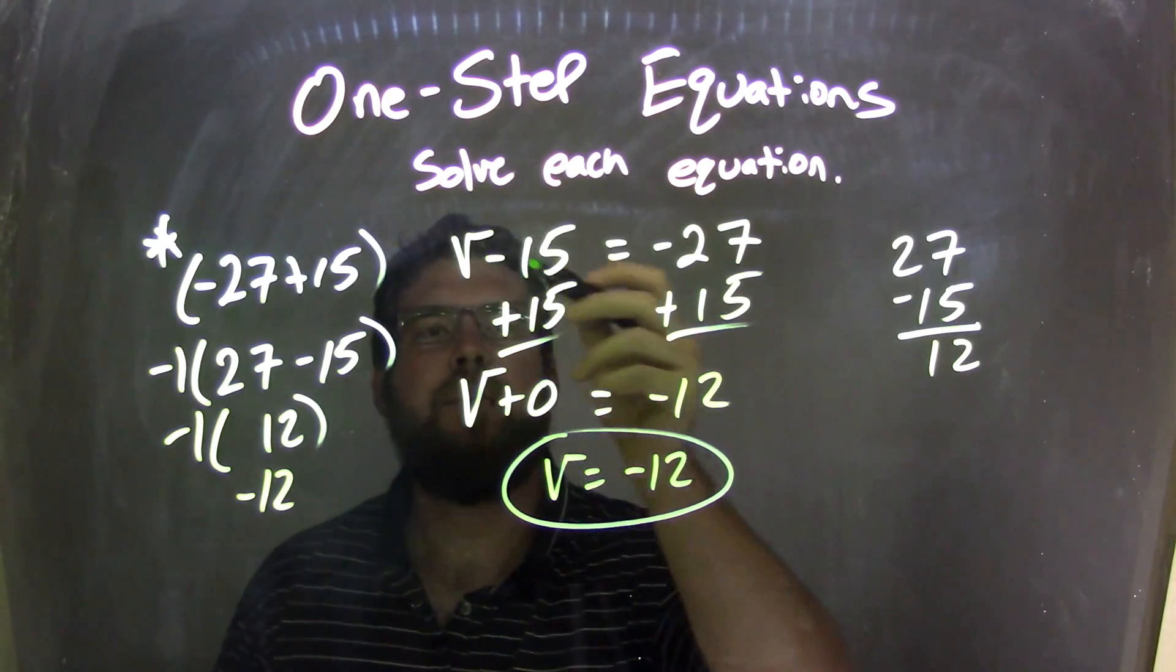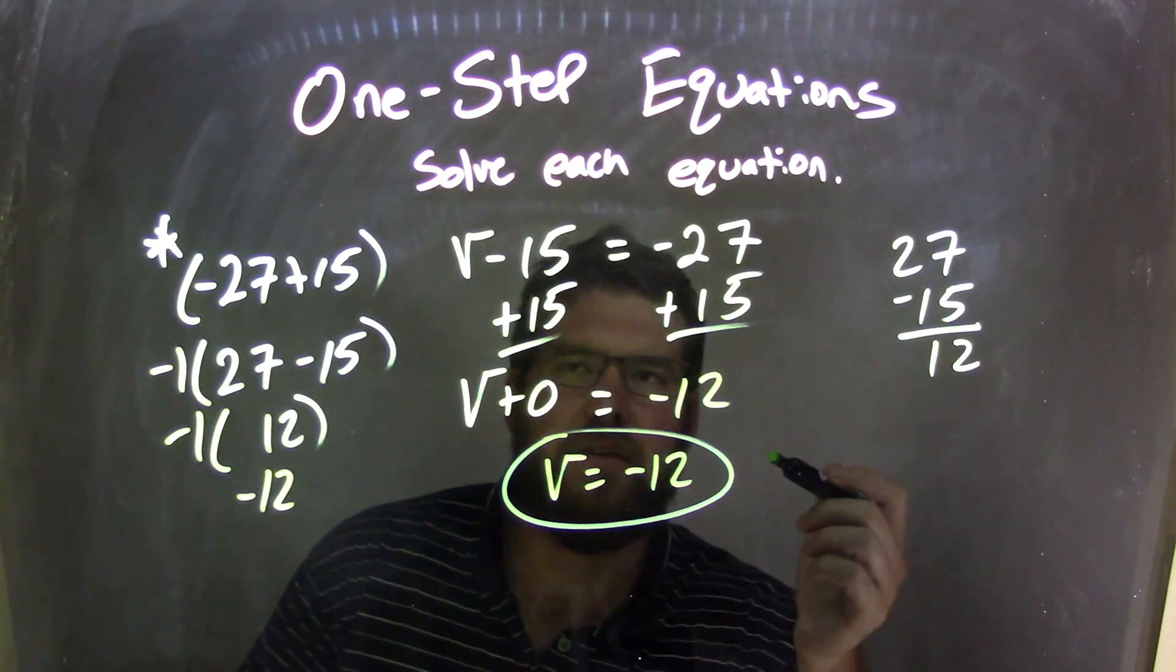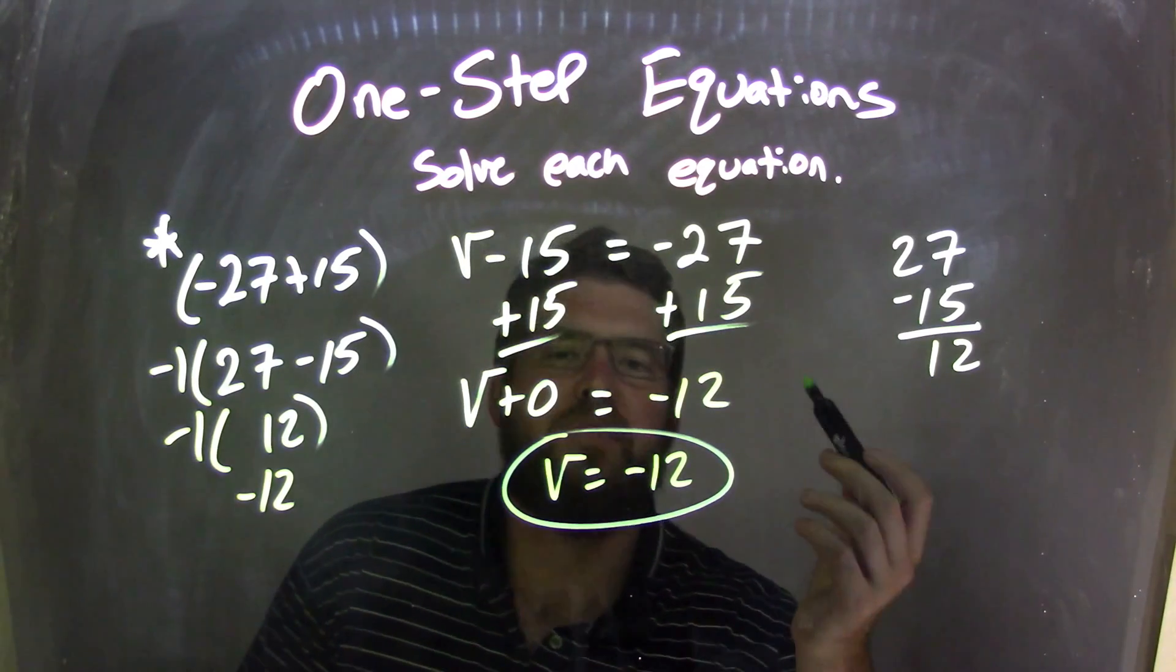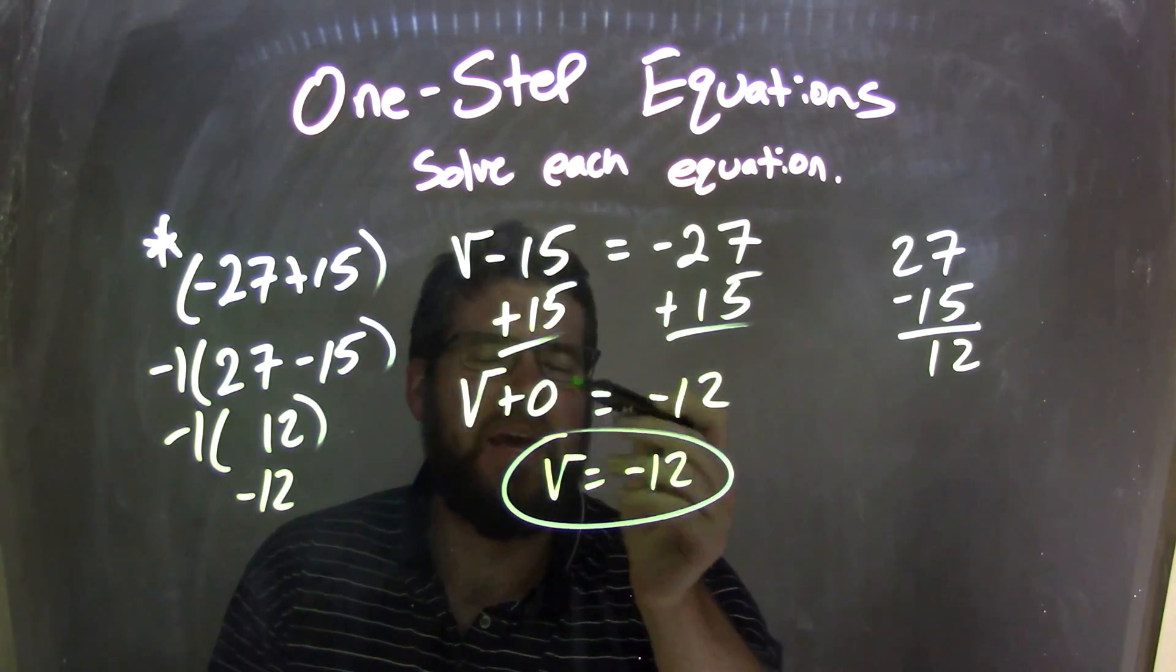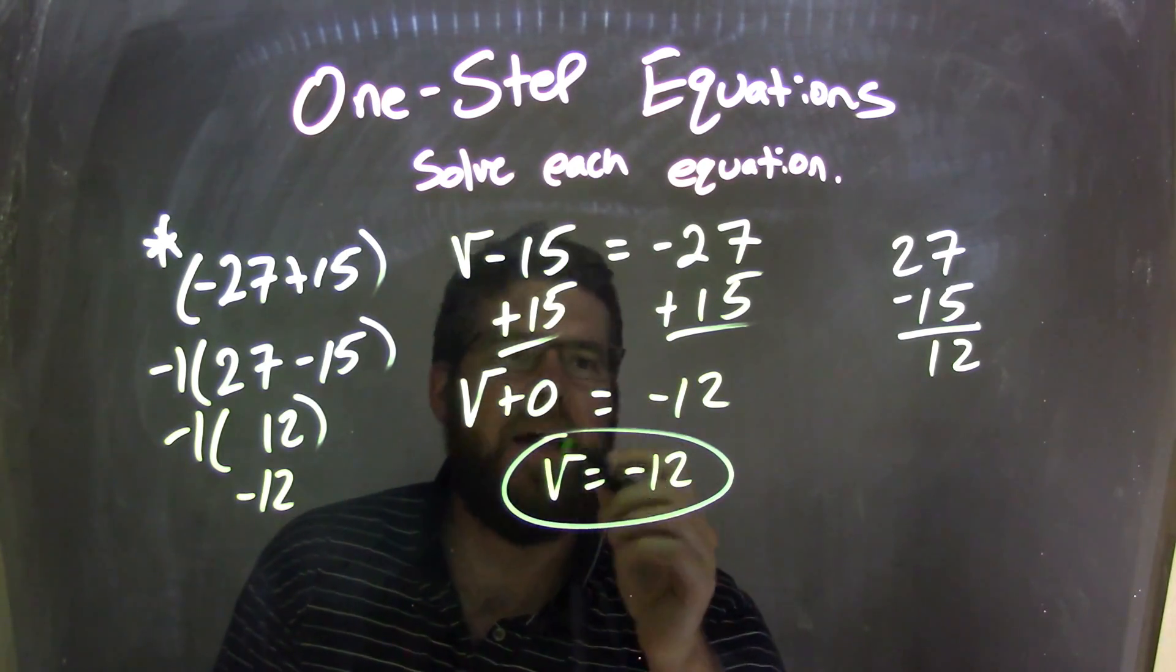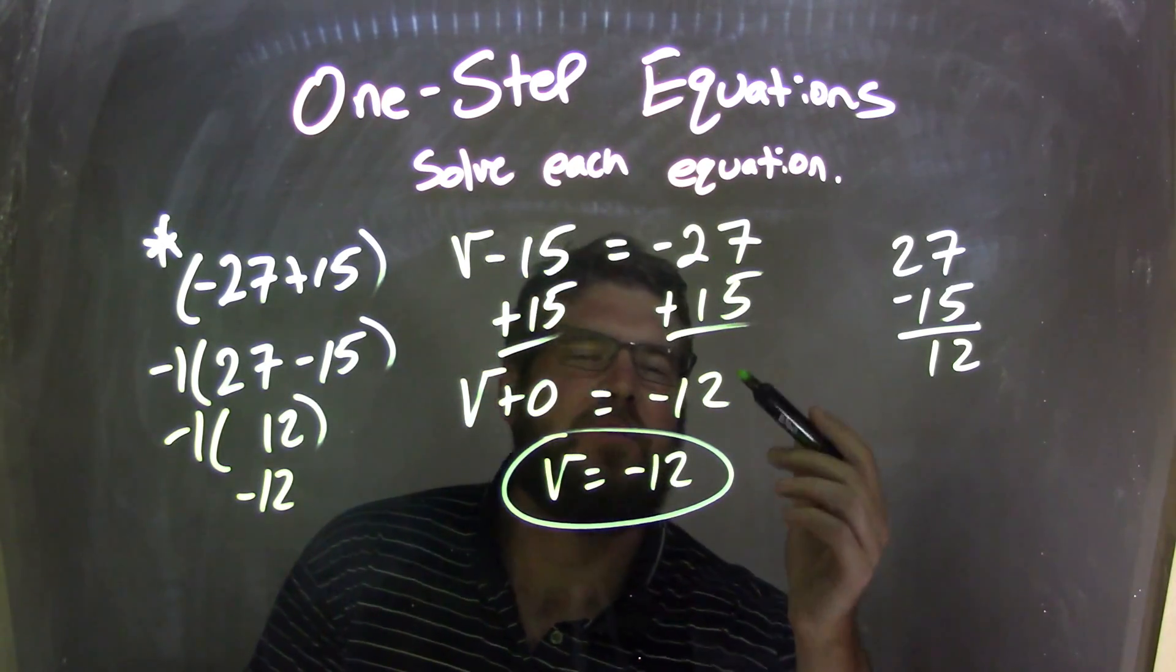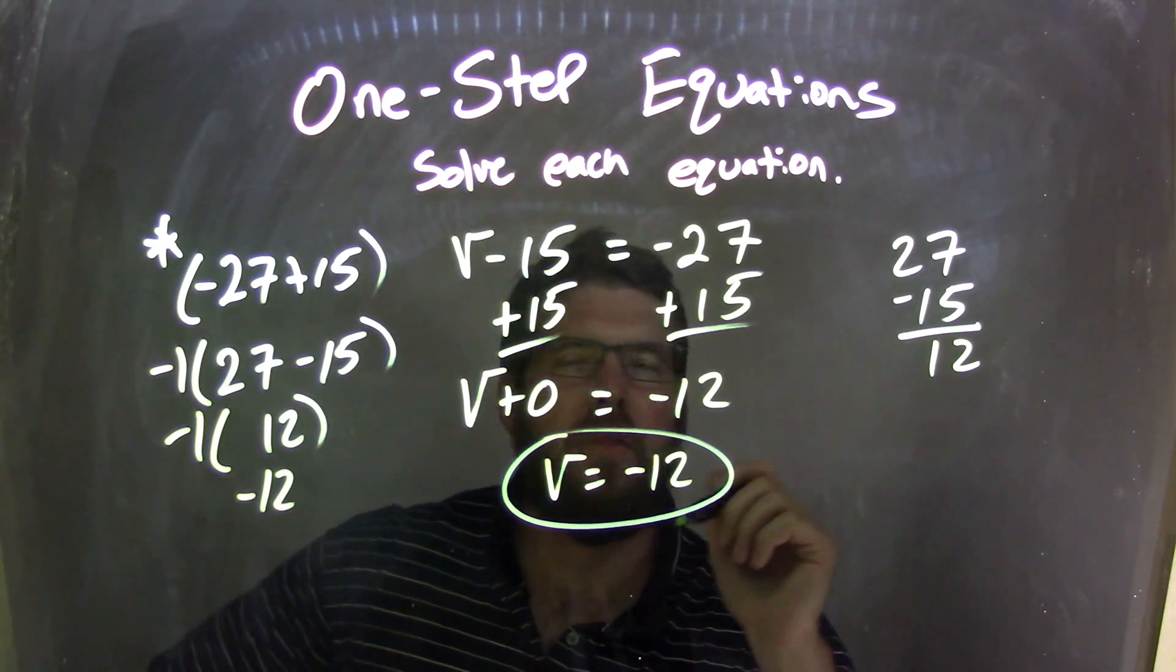So let's recap. If we start with v minus 15 equals negative 27, I need to add a 15 to both sides. I know that negative 15 plus 15, it just became 0, or minus 15 plus 15, 0, don't need that. But negative 27 plus 15, that was tricky.